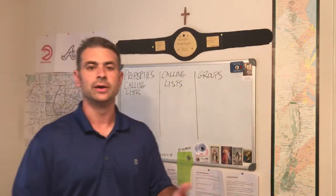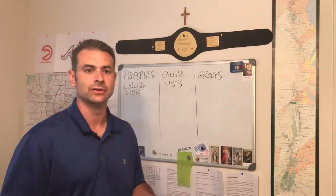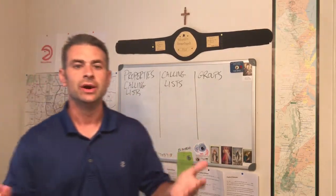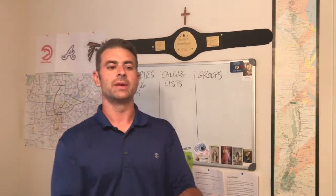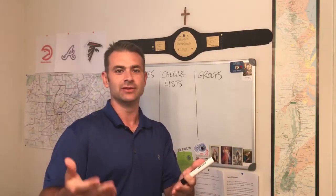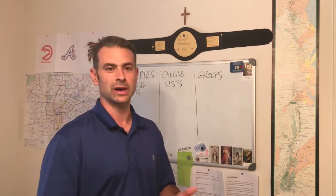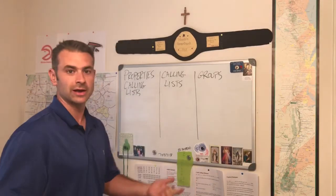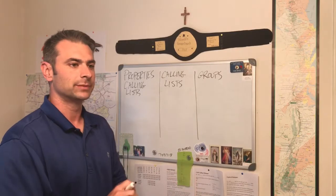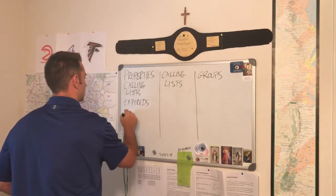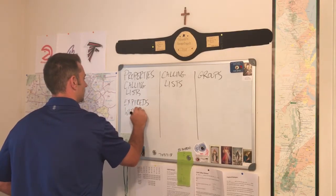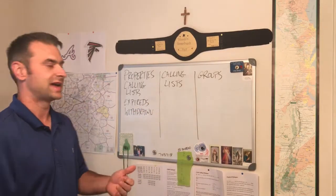Just like you see in Mojo in the data and dialer tab, you have the three sections. Properties calling lists — this is where all of the expired data and the FSBO data gets fed in. In my case, I get my data from Vulcan 7 and it's automatically populated into Mojo for me. Like Bob Lefler says, every day they're making more of them, and it just magically is in there when I log into Mojo every day. I have three lists I call from: expireds, withdrawn, and FSBOs.